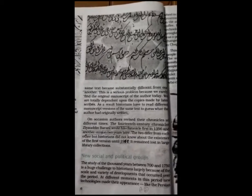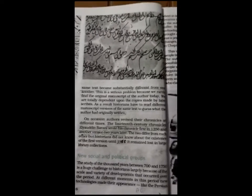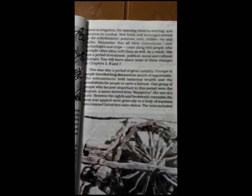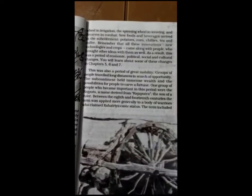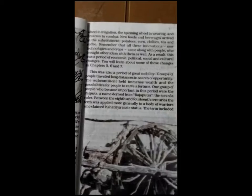Now let's start. Historians of the years between 700 and 1750 had observed a variety of social and political developments. The question is: what types of developments had occurred in between this period? For example, the use of Persian wheels in irrigation, the spinning wheel in weaving, and firearms in combat, along with the arrivals of new foods and privileges.